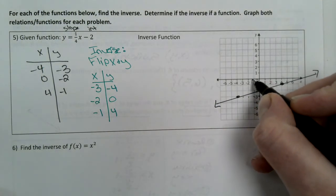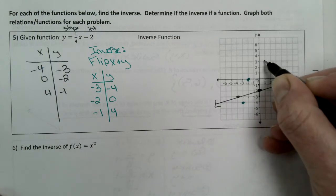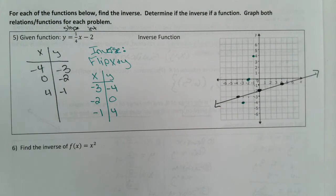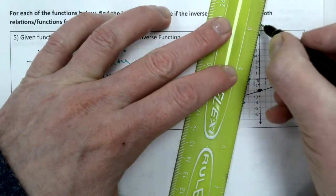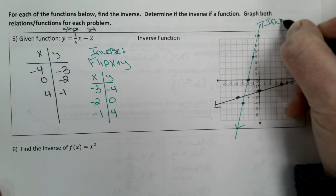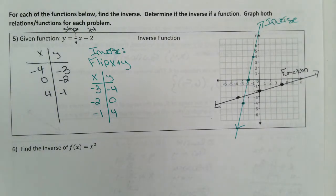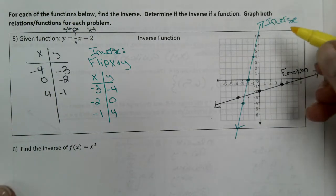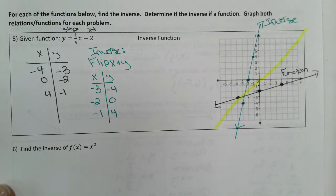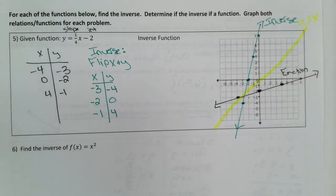So I'm going to graph the inverse now using the points negative 3, negative 4; negative 2, 0; and negative 1, 4. There's my inverse, and there's my original function. It was stated earlier that inverses are symmetrical along the line y equals x. There's the line y equals x — you can see that if you took this function and flipped it over that line, you would get the other one.